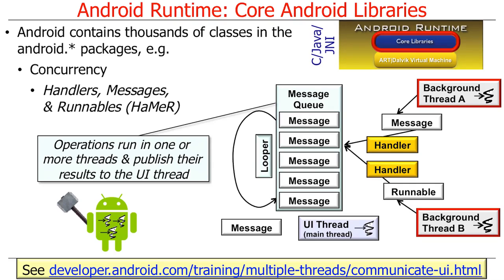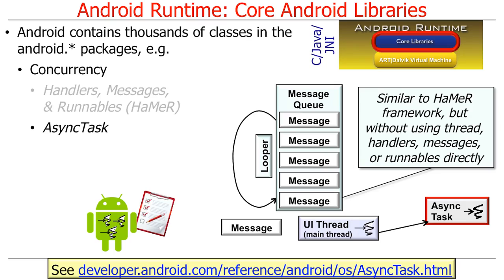We'll be talking a lot about the HaMeR framework throughout this course. There's another framework called the AsyncTask framework. The AsyncTask framework is similar to the HaMeR framework, but it allows concurrent operations to take place without requiring application developers to use threads, handlers, messages, or runnables directly. So in a sense, it's more object-oriented and is able to encapsulate and hide many of the low-level details of concurrent programming.